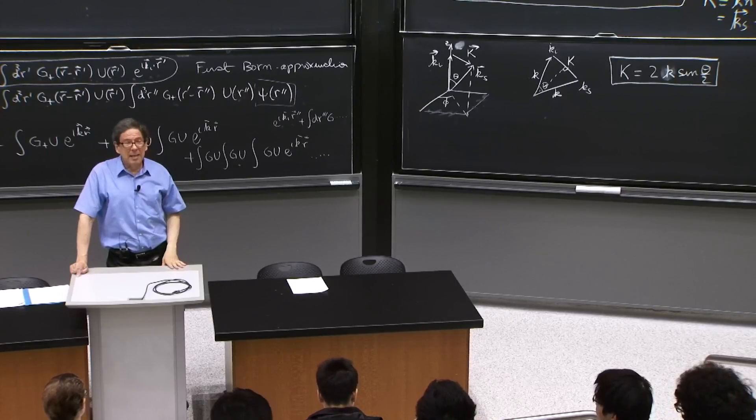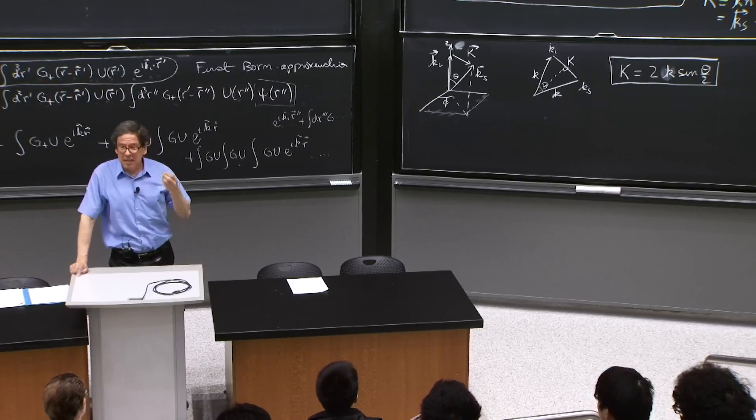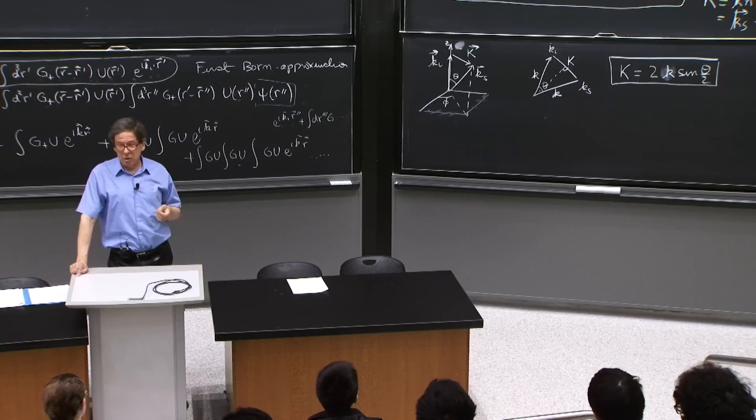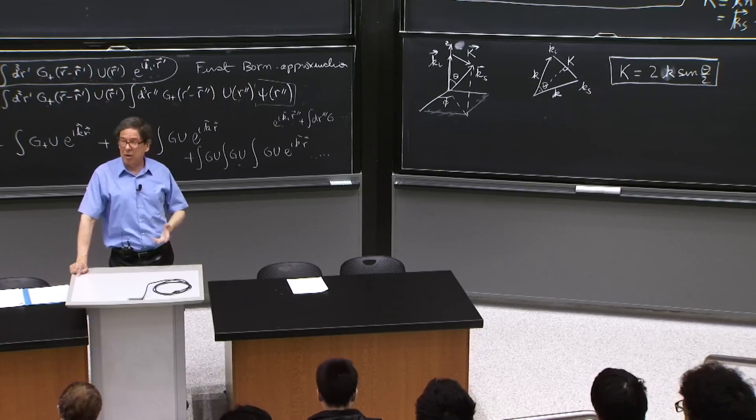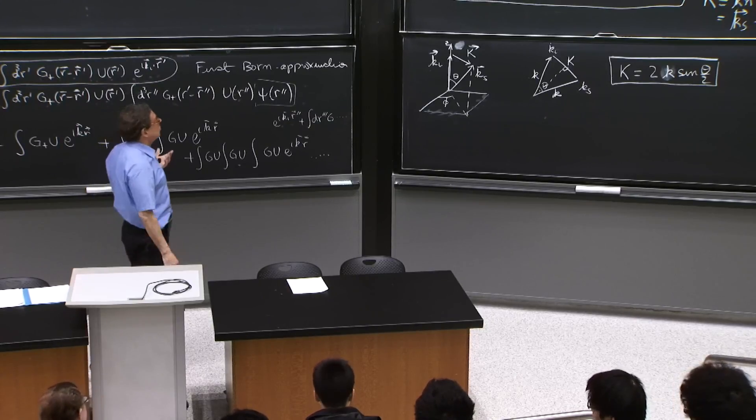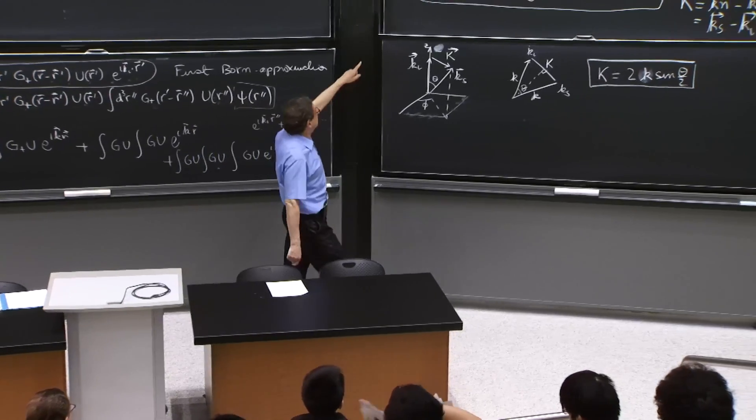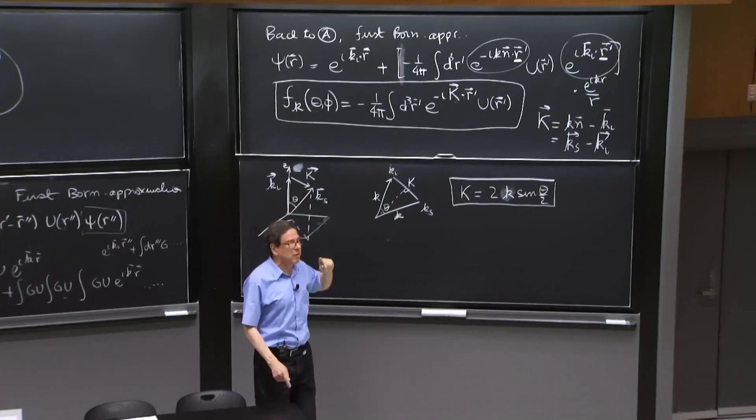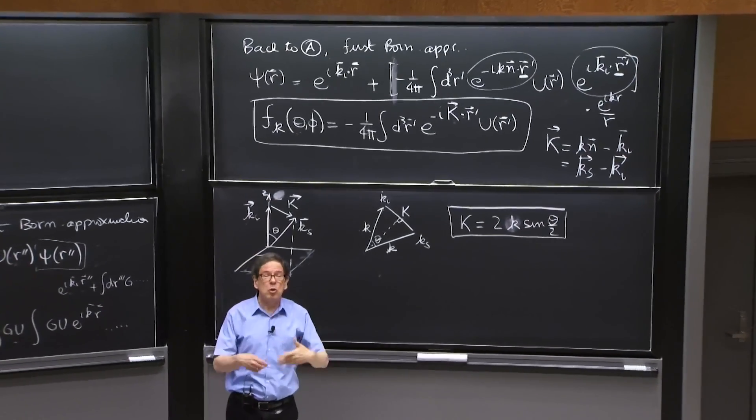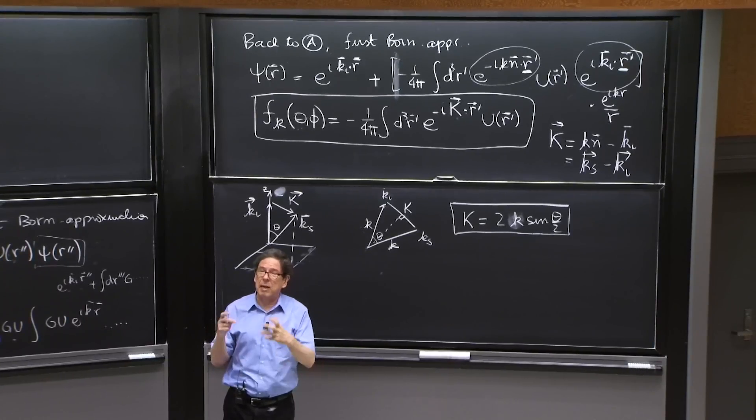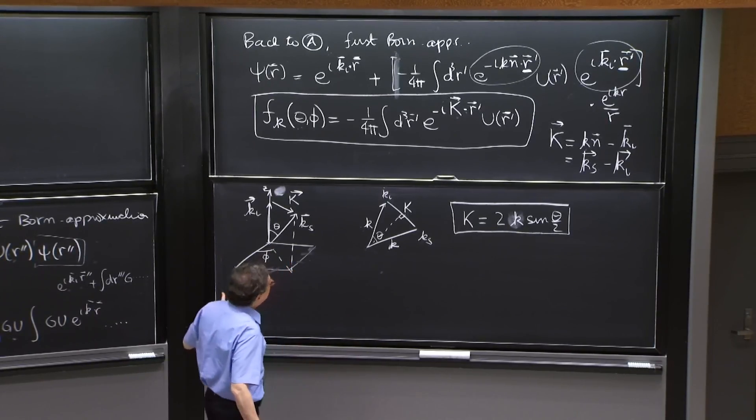Second, it gives you answers even in the case where the potential is not spherically symmetric. You remember, when potentials were spherically symmetric, the scattering amplitude didn't depend on phi. And we could use partial waves, and that's a nice way of solving things. But here,